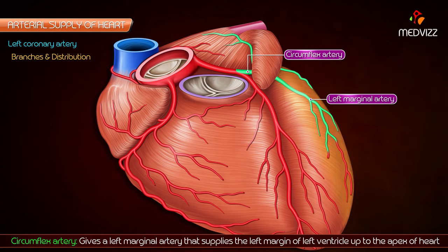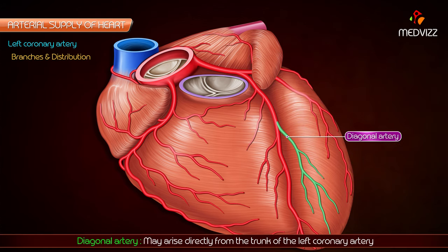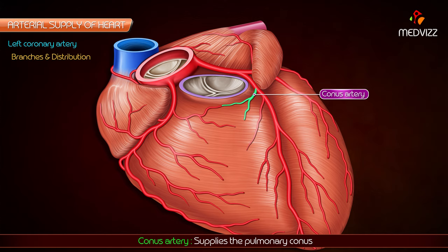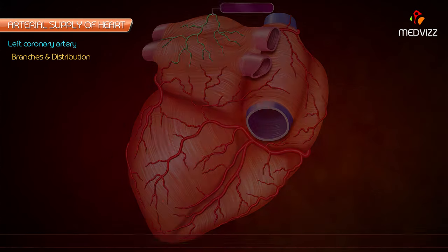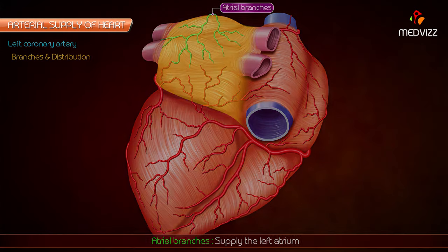The diagonal artery may arise directly from the trunk of the left coronary artery. The conus artery supplies the pulmonary conus. Atrial branches supply the left atrium.